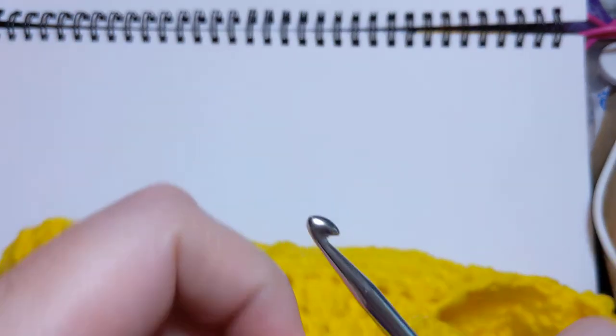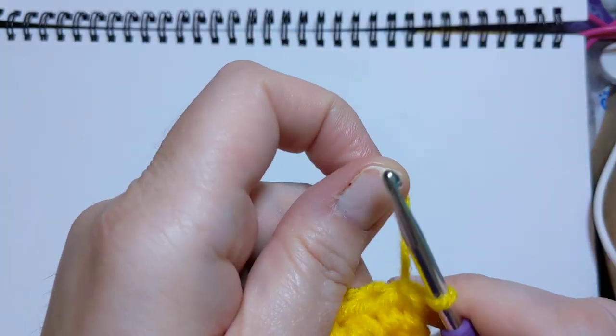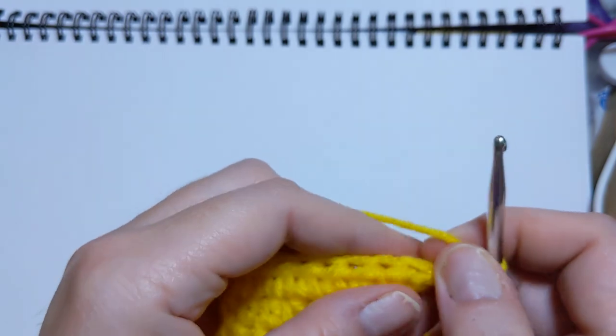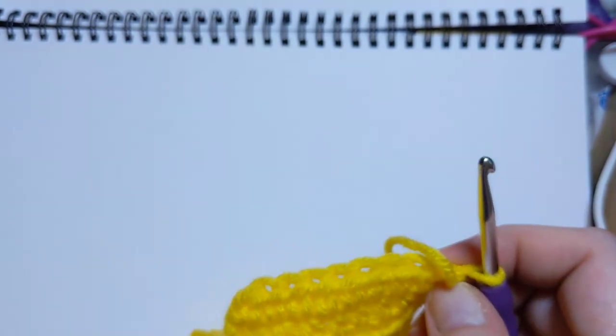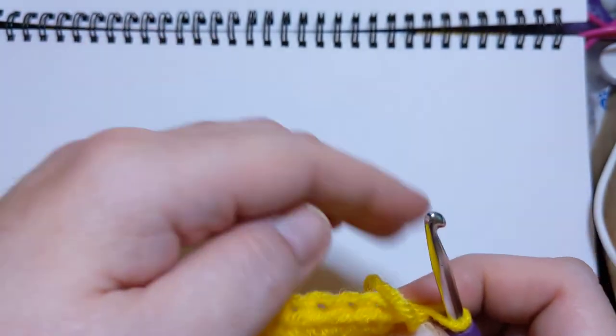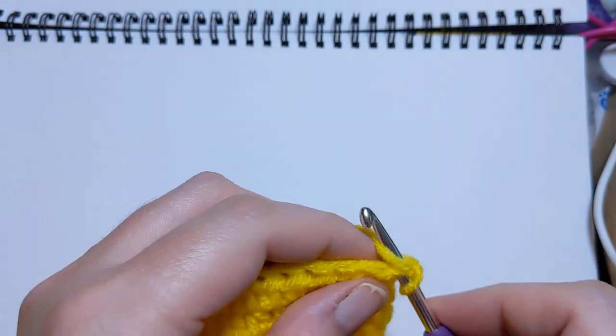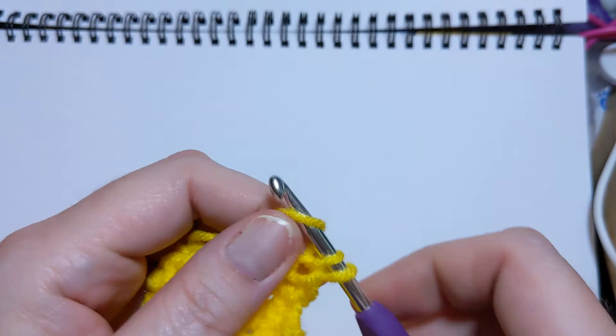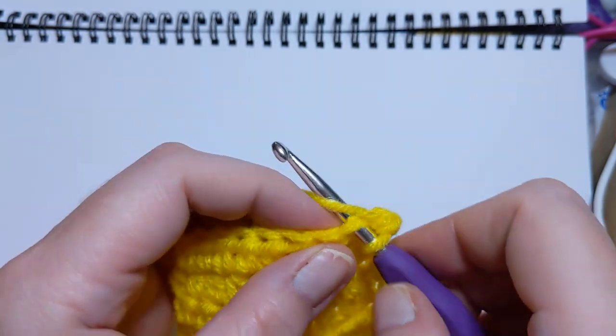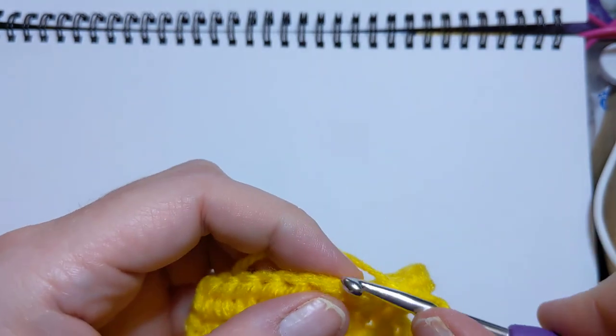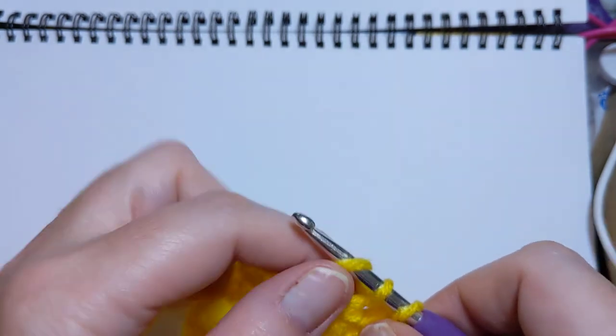Now we're going to add our buttonhole. When you've gotten to the end of one of your rows here, turn your work again. This time, we're going to single crochet. Okay. This is the only row that we single crochet in, except for that very first one where we're attaching. We're going to go three single crochets in the first three stitches. It's one. Two. And three.